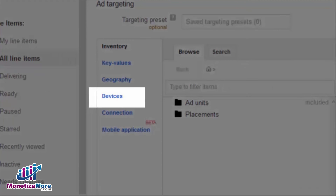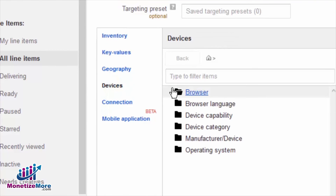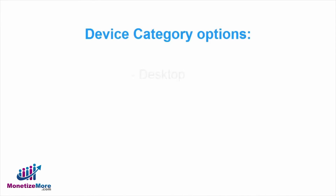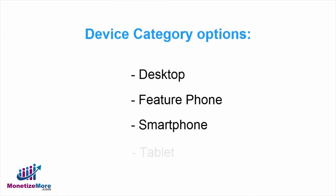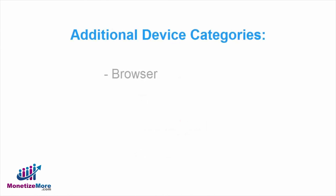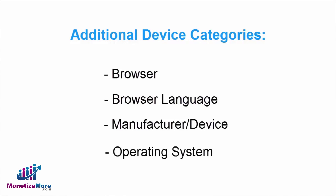Under Devices, we have a variety of targeting options. Within this category, we can choose amongst a number of specs, but one of the most useful is Device Category. This allows us to choose by Desktop, Feature Phone, Smartphone, and Tablet. In addition, we can choose by Browser, Browser Language, Manufacturer Device, and Operating System.